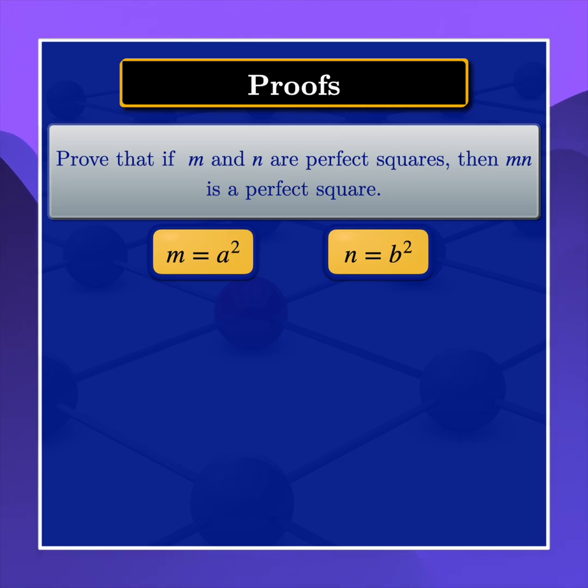And then we multiply m and n, so m times n is equal to the product of these values. So it will be a squared times b squared. And then we can rewrite this expression and it will be a times b, all squared.